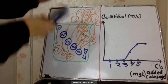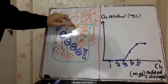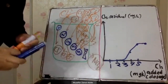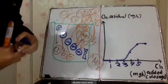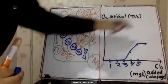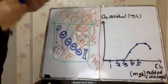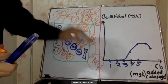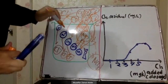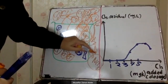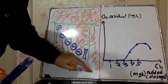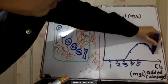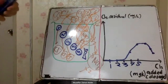If we keep adding chlorine, it will react with dichloramine and form nitrogen trichloride (NCl₃), which is not a disinfectant. So you can see a drop in the residual on the graph. Adding further chlorine reacts with the second dichloramine, producing more NCl₃ and reducing the residual chlorine further.